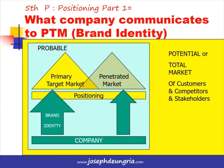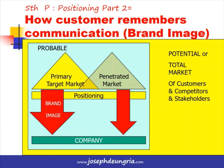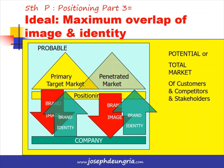The fifth P is Positioning — the communication made available to the primary target market and the penetrated market. When the communication comes from the company, this is what we call brand identity. How the customer remembers the communication is what we call brand image. Similar to the primary and penetrated market analogy, the greater the overlap between brand identity and brand image, the better the marketing communication efficiency.